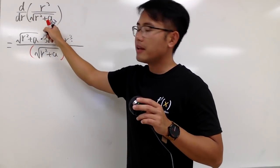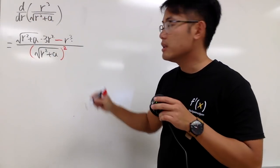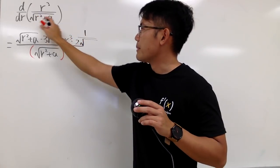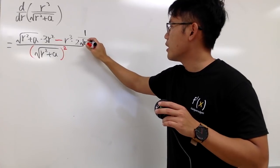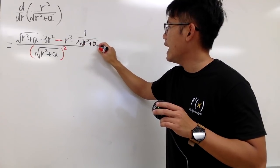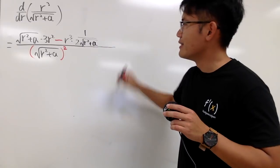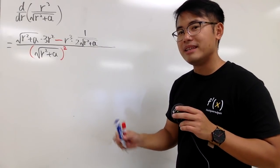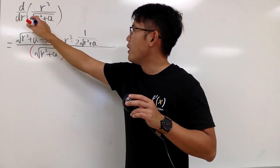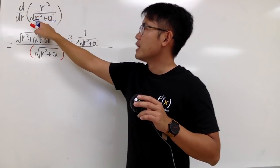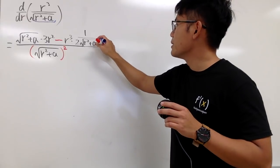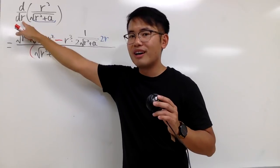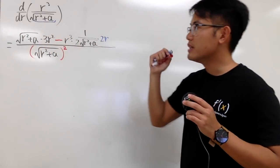Here we have square root of something. The derivative of square root of something is 1 over 2 times square root of the same thing inside, so that's r squared plus a. And remember, the chain rule says we have to multiply by the derivative of the inside — derivative of r squared plus a. Derivative of r squared is 2r, so we multiply by 2r.